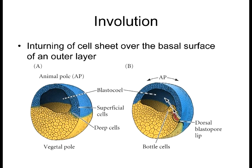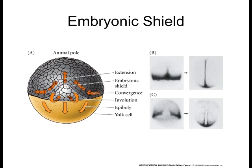The same thing happens in zebrafish when the embryonic shield starts moving. Cells turn inward and move up underneath the outer layer of cells. In zebrafish, involution occurs in the formation of the embryonic shield — the yellow area being the yolk — as the embryonic shield starts moving down, cells undergo involution and move up back under the top layer. In Xenopus, involution occurs at the junction between the ectoderm and endoderm.